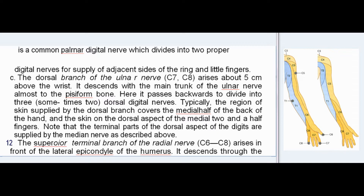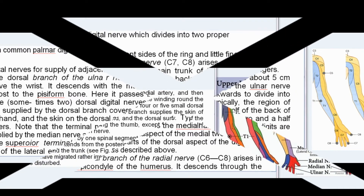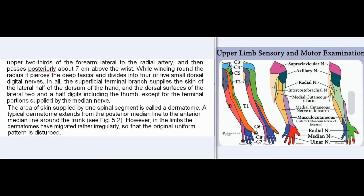12. The superficial terminal branch of the radial nerve (C6–C8) arises in front of the lateral epicondyle of the humerus, descends through the upper two-thirds of the forearm lateral to the radial artery, then passes posteriorly about 7 cm above the wrist, piercing the deep fascia to divide into four or five small dorsal digital nerves. It supplies the skin of the lateral half of the dorsum of the hand and the dorsal surfaces of the lateral two and a half digits including the thumb, except for the terminal portions supplied by the median nerve.